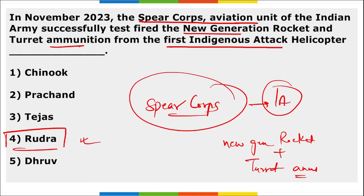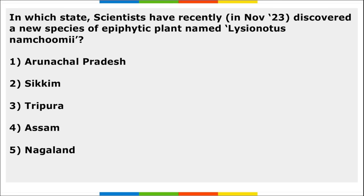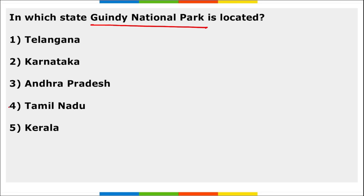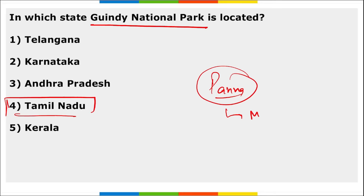Scientists at the Botanical Survey of India's Arunachal Pradesh Regional Centre discovered a new species of epiphytic plant named Lysinotus namchumi in Arunachal Pradesh in the Eastern Himalayas. Guindy National Park is located in Tamil Nadu. Panna Tiger Reserve is in Madhya Pradesh. These are your important current affairs for the first week of November.